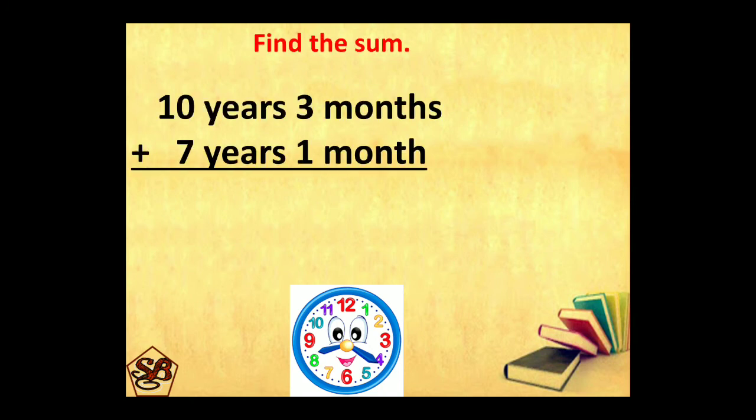Now here we are adding years and months. Adding the smaller unit, 3 plus 1 is 4 months. Adding the bigger unit, 10 plus 7 is 17 years. Now here the focus point is that we have to compare months with 12, because 1 year is equal to 12 months. This number should be equal to or greater than 12 to be regrouped. But 4 is less than 12, so this is our final answer.